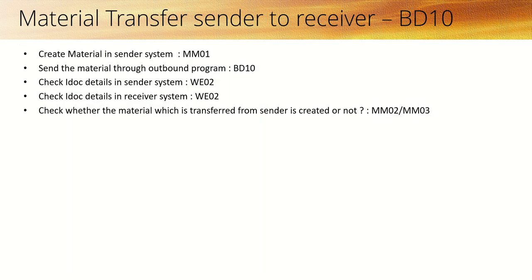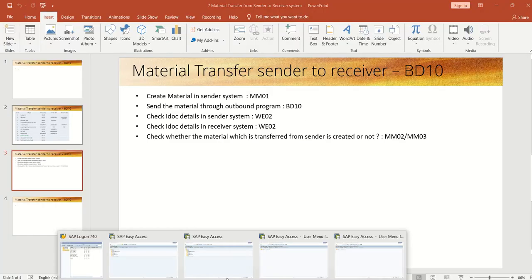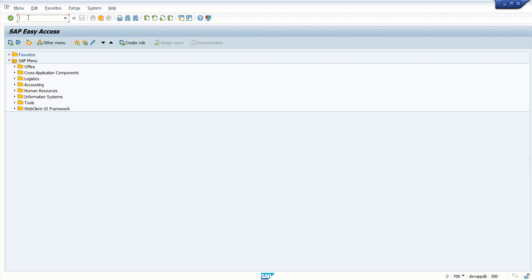Now let's see how to transfer the material master from sender to receiver system. The steps we need to follow are: first, we will create the material master in the sender system with T-code MM01. Once it is created, we need to transfer through the outbound program BD10. Then we will check the IDoc details in the sender system with T-code WE02. After that, we monitor the same in the receiver system with WE02, and check whether the material is created or not in the receiver system with T-code MM02 or MM03.